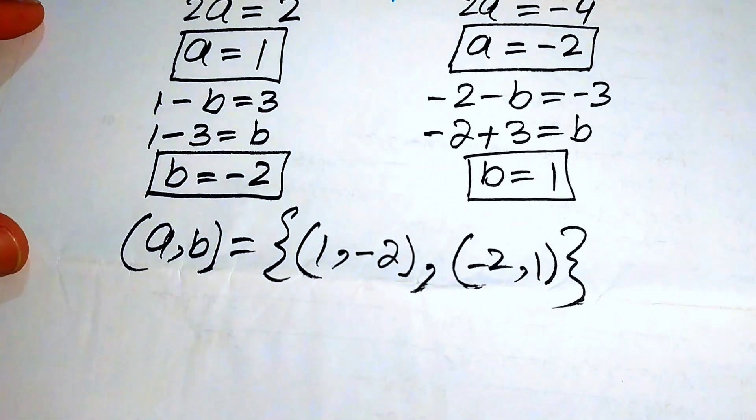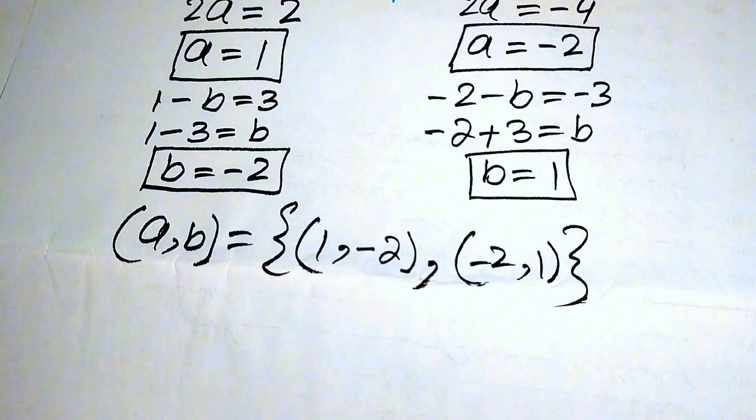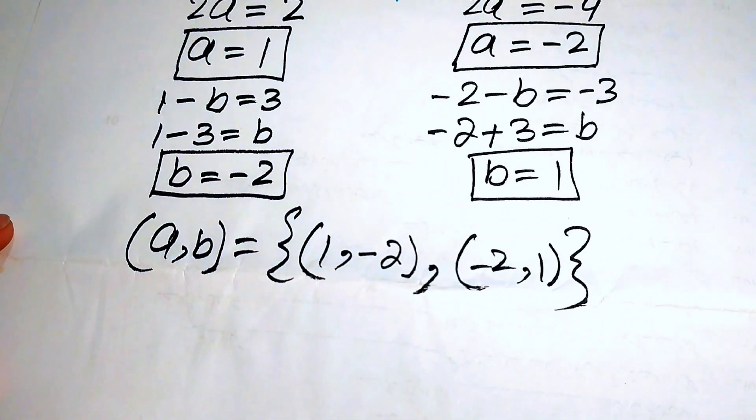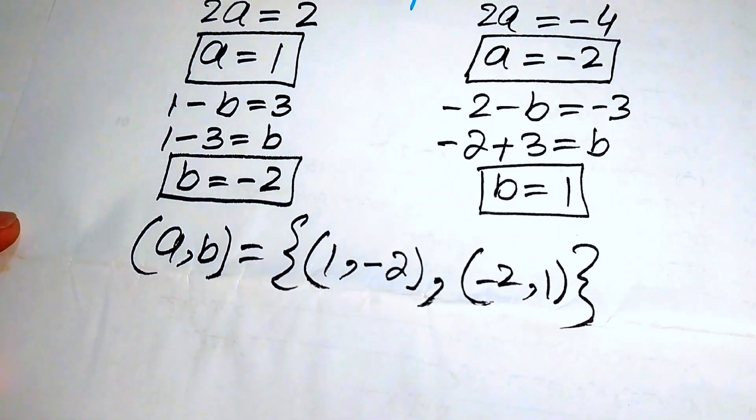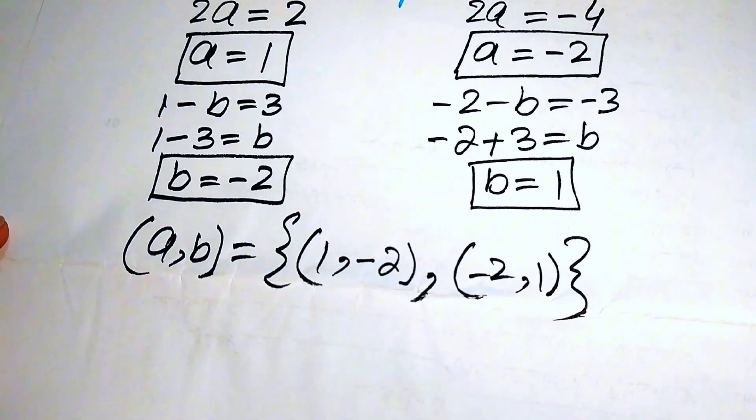Finally, our solution set is: a equals 1 and b equals minus 2, or a equals minus 2 and b equals 1. Thank you so much for watching this video. Please subscribe to my channel for more exciting videos.